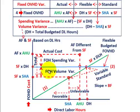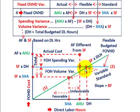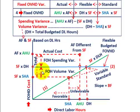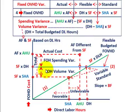The fixed overhead volume variance is the difference between the standard fixed rate times standard hours allowed, versus the standard fixed rate times denominator hours. That's the difference between our standard amount and flexible amount — the blue line versus the red point. On our graph, the flexible amount is denominator hours times standard fixed rate, and the standard amount is standard hours allowed times standard fixed rate. That difference is our volume variance, visible on the graph.